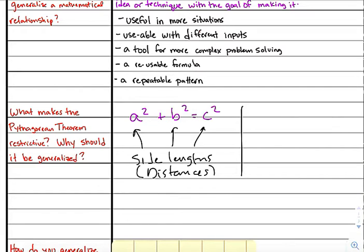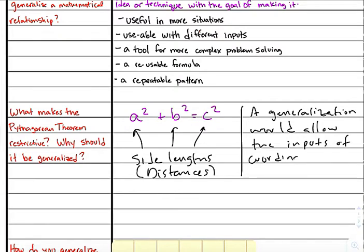And so, the restricted part of this is that you actually need distances. And so, distances aren't actually very easy to come by. That's actually a weird thing in math to say, well, the distance of this is just five. That's weird. It's not very universal. And so, when you use the Pythagorean Theorem, that's a big restriction that requires side lengths. So, the question of why should it be generalized, well, it's kind of the opposite of that. A generalization would allow for different inputs, namely something more common in math, coordinate pairs.